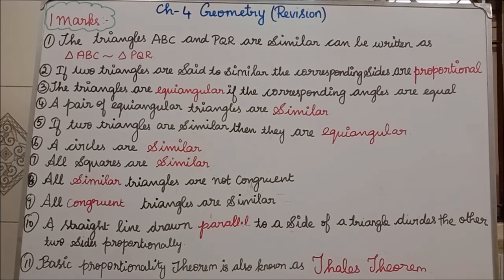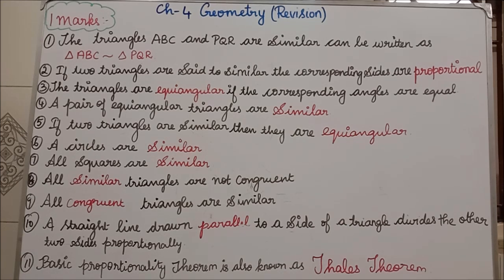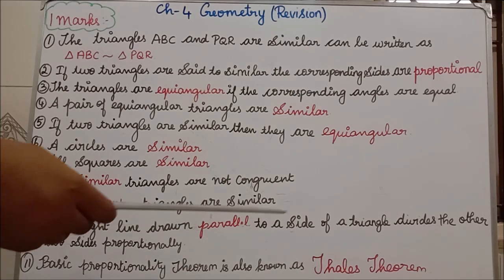Tenth one: a straight line drawn parallel to a side of a triangle divides the other two sides proportionally. This concept we learned in the Basic Proportionality Theorem. Eleventh one: Basic Proportionality Theorem is also known as BPT theorem or Thales theorem.